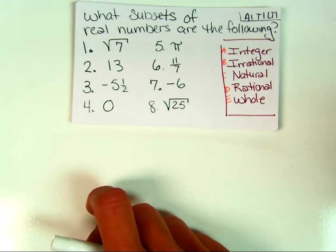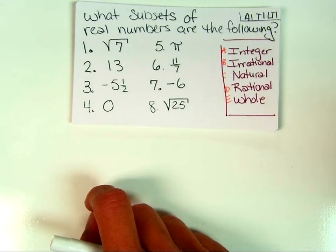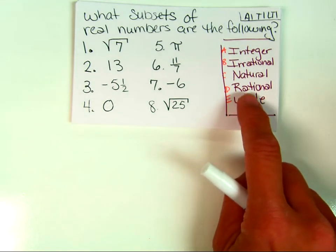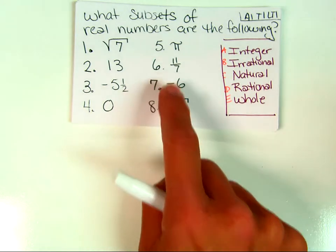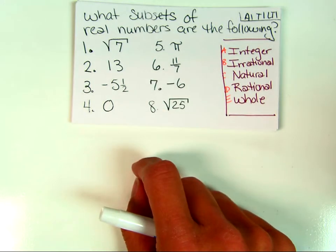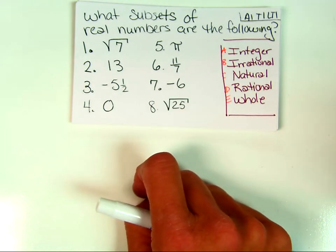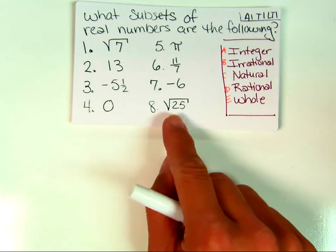Pi is the most popular irrational number — it goes on forever and never repeats. Eleven sevenths is a fraction, and since it can be written as a ratio of two integers, it is a rational number. Negative six is an integer and a rational number. The square root of twenty-five simplifies to five, so it is a natural number, whole number, integer, and rational number.